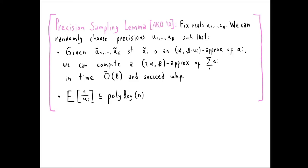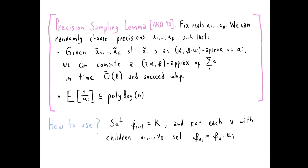The precision sampling lemma, due to Andoni, Krautgammer, and Onak, says the following. Fix real numbers a_1 through a_b. We can randomly choose precisions u_1 through u_b from some distribution such that if we are given approximations ã_i that are (α, β·u_i) approximations of a_i, then there is a procedure to compute a (2α, β) approximation of the sum of the a_i's, running in roughly linear time in b and succeeding with high probability. We lose nothing on additive error and the multiplicative error only increases slightly. Moreover, in expectation, 1/u_i is bounded by polylog n.